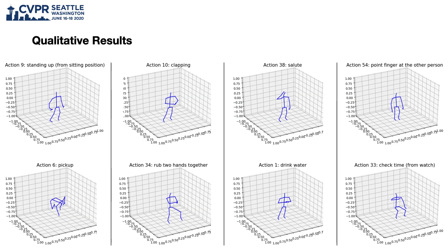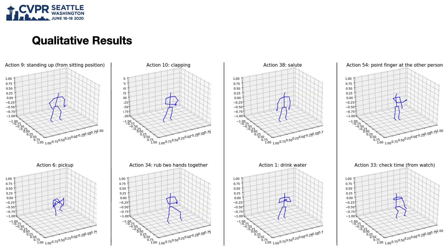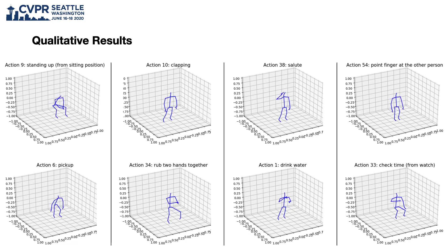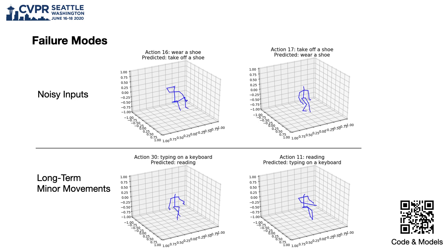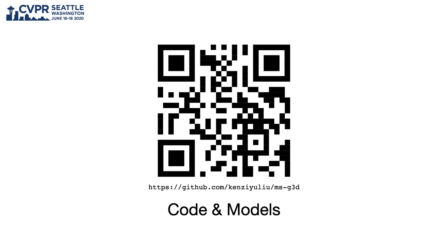Here we show some correctly classified actions. Each column contains two actions that are visually similar, and our model correctly classifies all of them. Finally, typical failure modes include noisy inputs and minor body movements that are hard to detect. Our code and models are available online. Thank you.